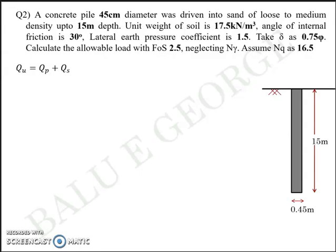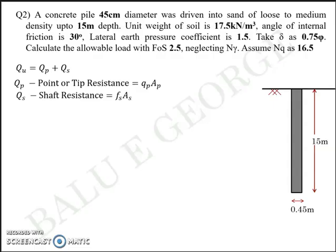Step number one, quite similar to the previous question. QU is equal to QP plus QS. QP is a point or tip resistance given as qp·Ap. QS is the shaft resistance fs·As. Ap is the same value because you have the same pile here and As is again the same value because you have the same geometry.